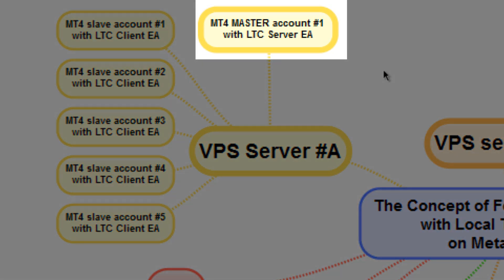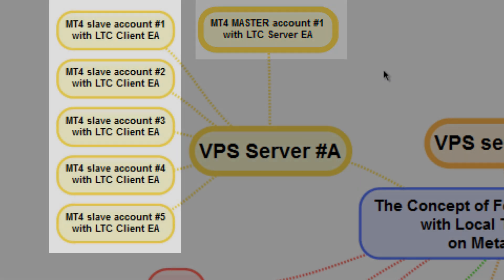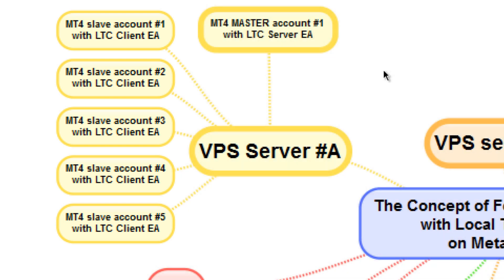Let's take a closer look at VPS Server A. Here we have one MetaTrader master account number one and five MetaTrader slave accounts numbered one through five. The master account has a Server EA attached — it is part of the Local Trade Copier software. It monitors the account, and when any trading action is performed it converts it into a trading signal and sends it to the client accounts. Those five client accounts have a Client EA attached, which is the other part of the LTC software, so all these accounts will repeat the same trading actions.